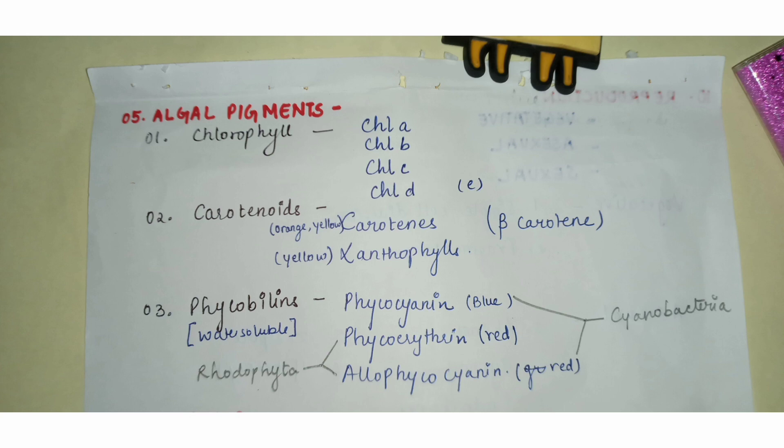Among chlorophylls, chlorophyll a and b are the important pigments present in almost all plant divisions. Chlorophyll c, d, and e also exist.